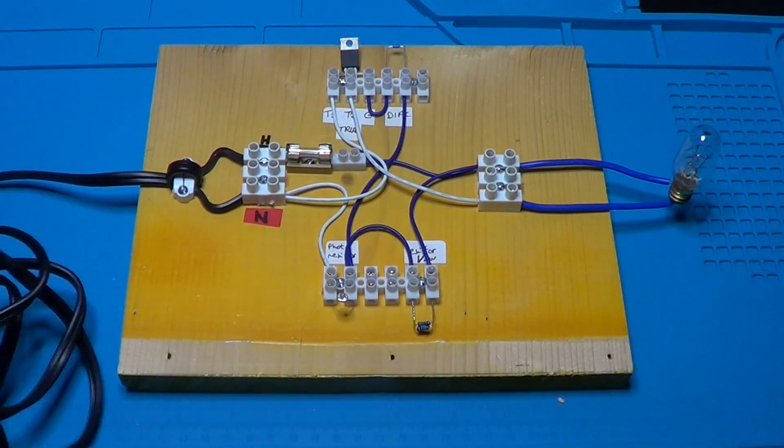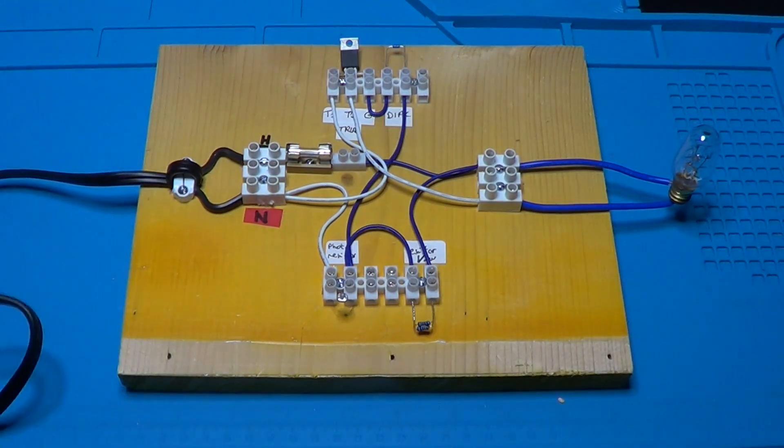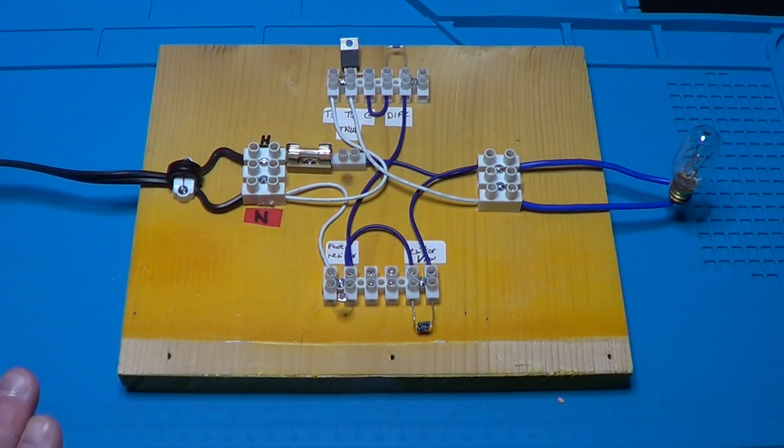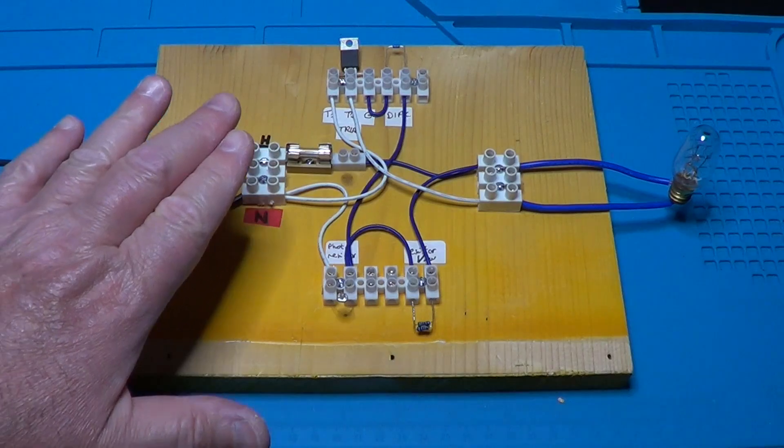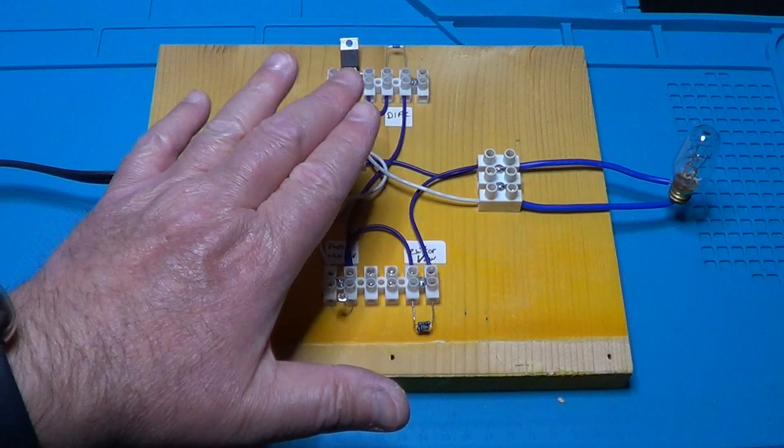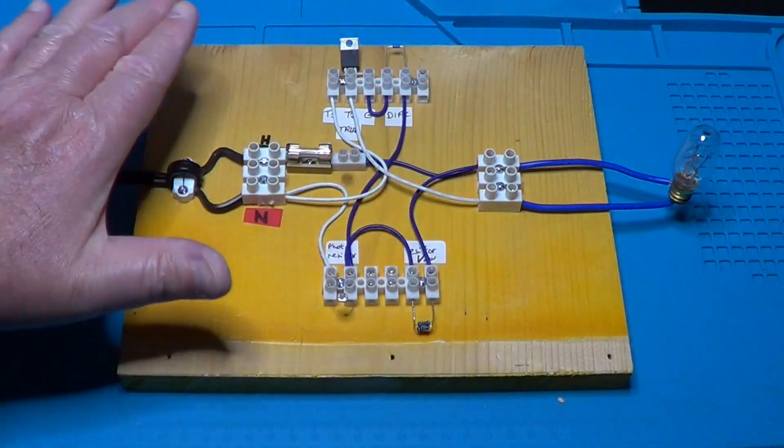Let's now power up the circuit and test it. I am plugging it in the outlet and from now on I will need to be very careful not to touch any of the naked wires. To test the circuit functionality, I will just need to obscure the photoresistor and verify that the light bulb turns on. And in fact, that is exactly what is happening.